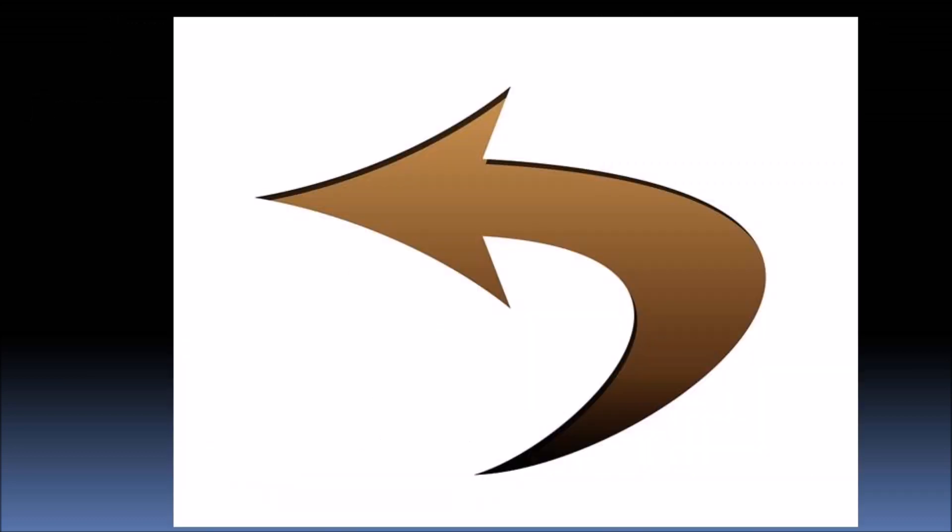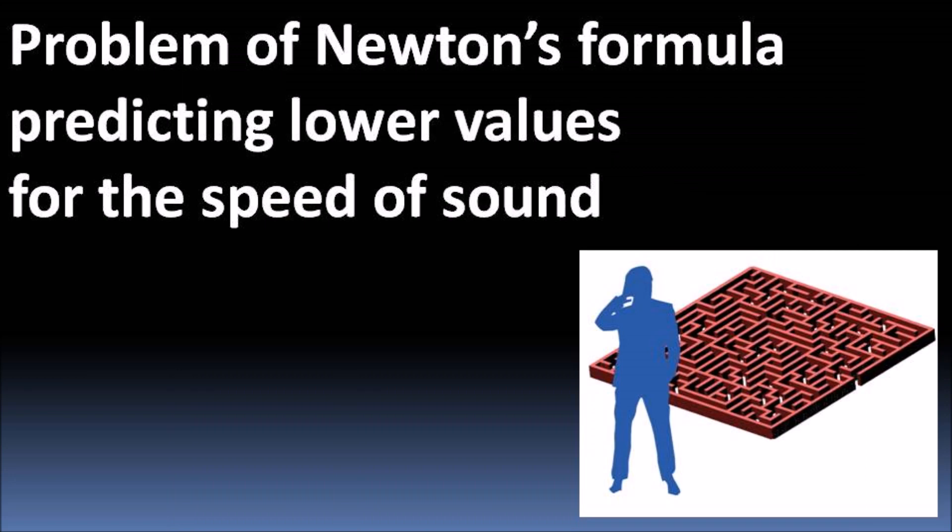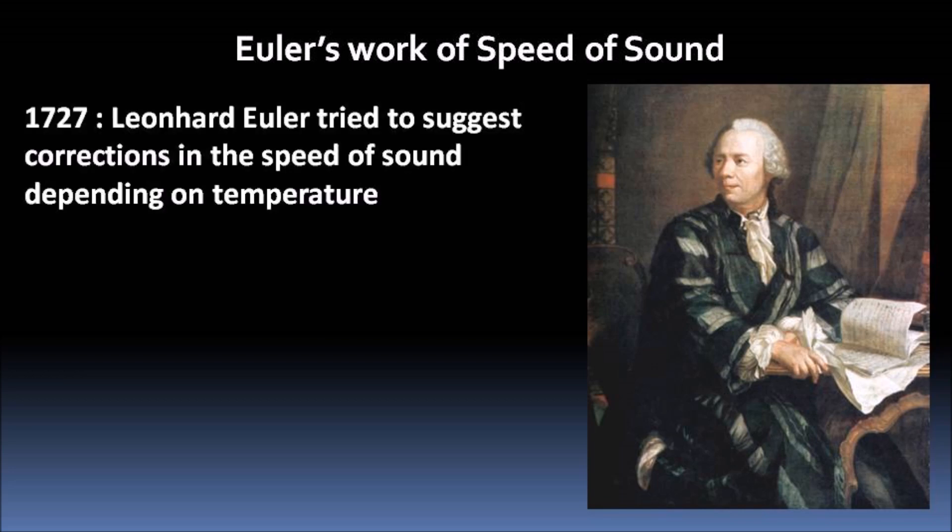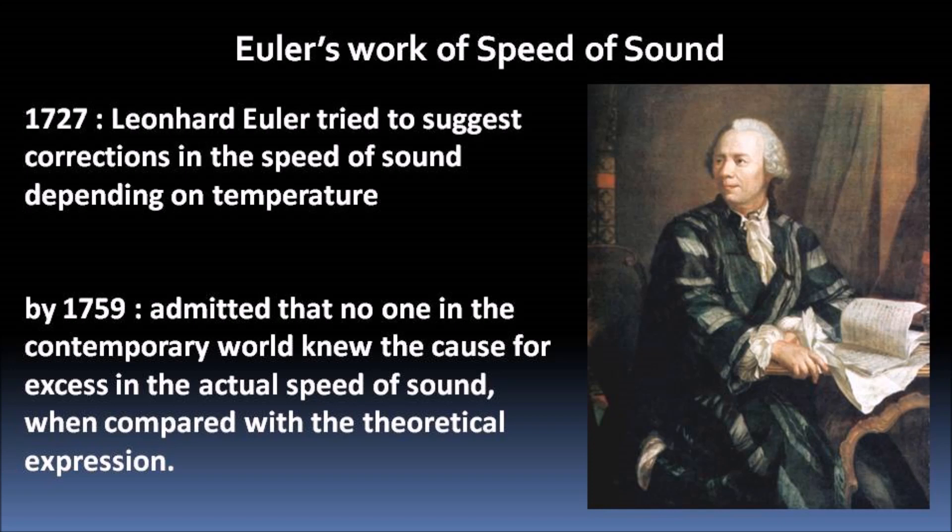Now we come back to the problem of Newton's formula predicting lower values for the speed of sound. Just like Newton, we read Euler also in nearly every field of science and math. By the time of the death of Newton in 1726 or 1727, Euler tried to suggest corrections in the speed of sound depending on temperature. But by 1759, he admitted that no one in the contemporary world knew the cause for excess in the actual speed of sound when compared with the theoretical expression.